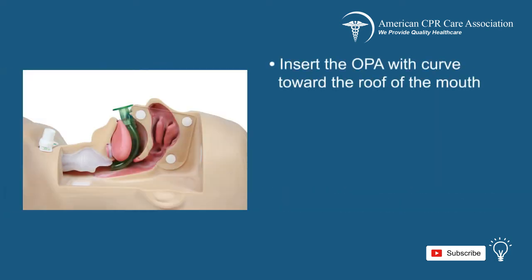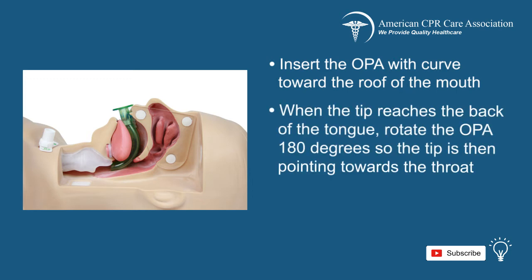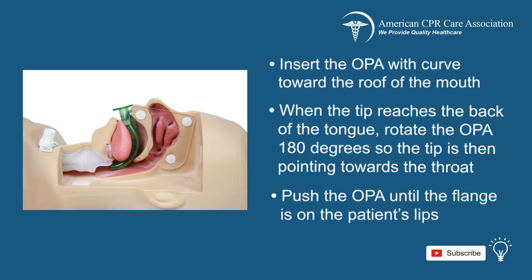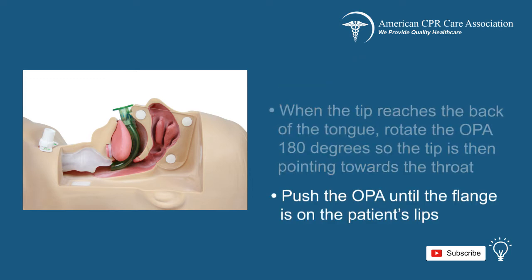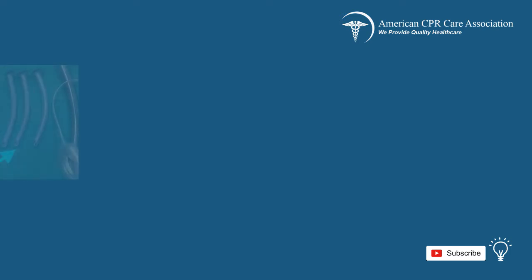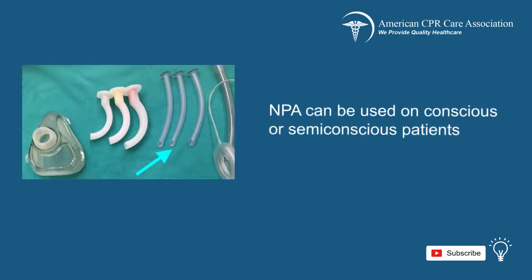Insert the OPA as it curves upward toward the roof of the mouth, being mindful not to push the tongue into the throat. When the tip reaches the back of the tongue, past the soft palate, rotate the OPA 180 degrees so that the tip is then pointing toward the throat. Push the OPA slowly until the flange is resting on the patient's lips.